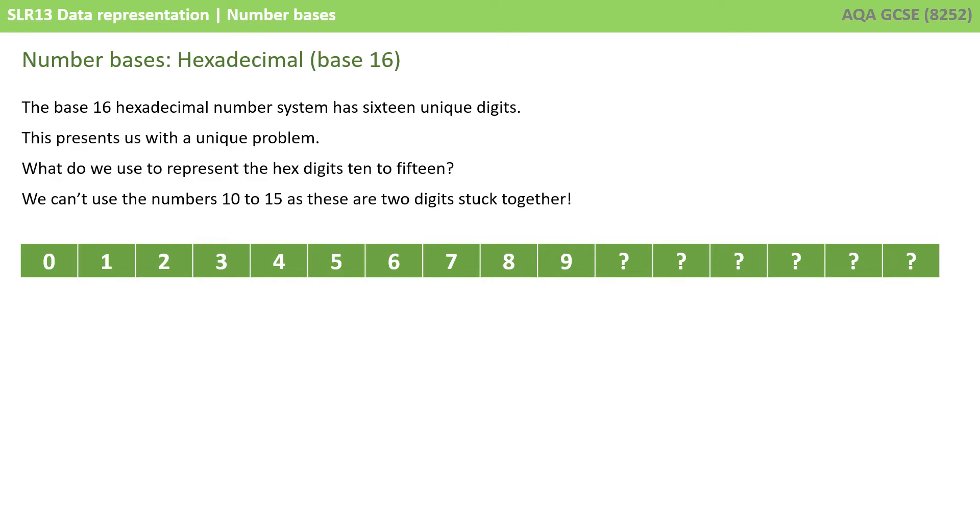Hexadecimal is a base 16 number system, and it follows exactly the same principles as the other number systems we've just been looking at. The only difference is with hex, we have 16 unique digits. This obviously presents us with a bit of a unique problem. What do we use to represent the hex digits 10 to 15? We can't simply use our decimal numbers 10 for 10 or 15 for 15, as these are two digits stuck together.